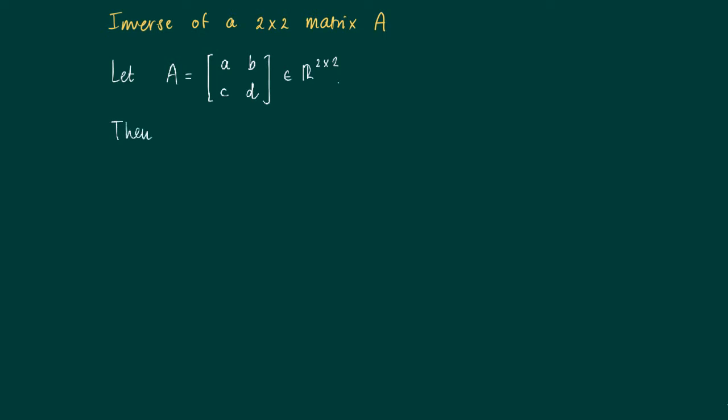Then the inverse of this matrix exists if only some kind of cross product a times d minus c times b is non-zero.